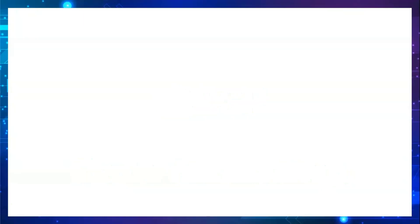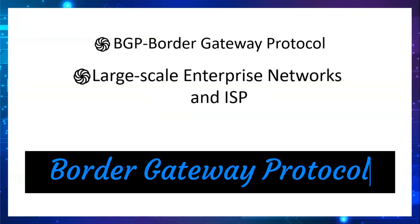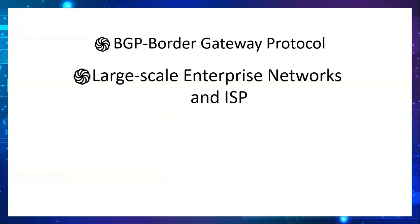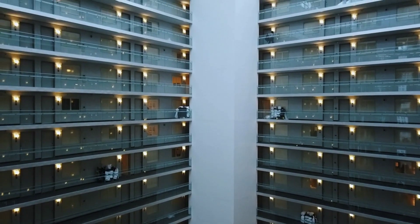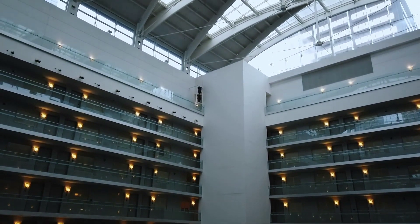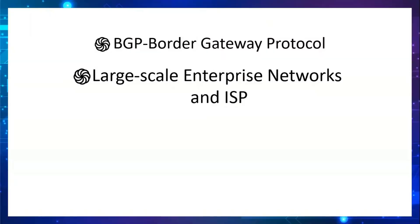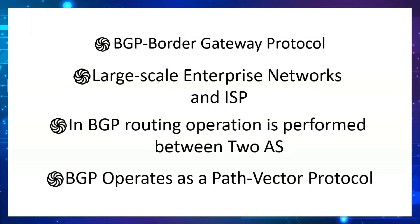Before going into the configuration, we will see some basics of BGP. BGP stands for Border Gateway Routing Protocol. BGP is basically used in ISPs (Internet Service Providers) to establish routing between two different organizations or companies, and also in large-scale enterprise networks. BGP operates between different Autonomous Systems (AS) and is a path vector protocol.